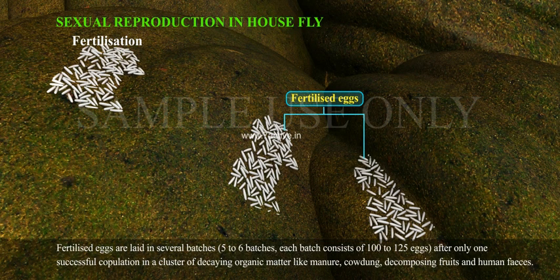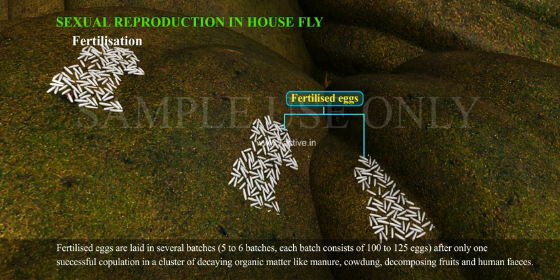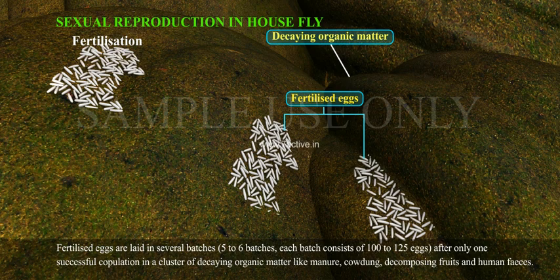Fertilized eggs are laid in several batches — five to six batches — each batch consisting of 100 to 125 eggs, after only one successful copulation, in a cluster of decaying organic matter like manure, cow dung, decomposing fruits, and human feces.